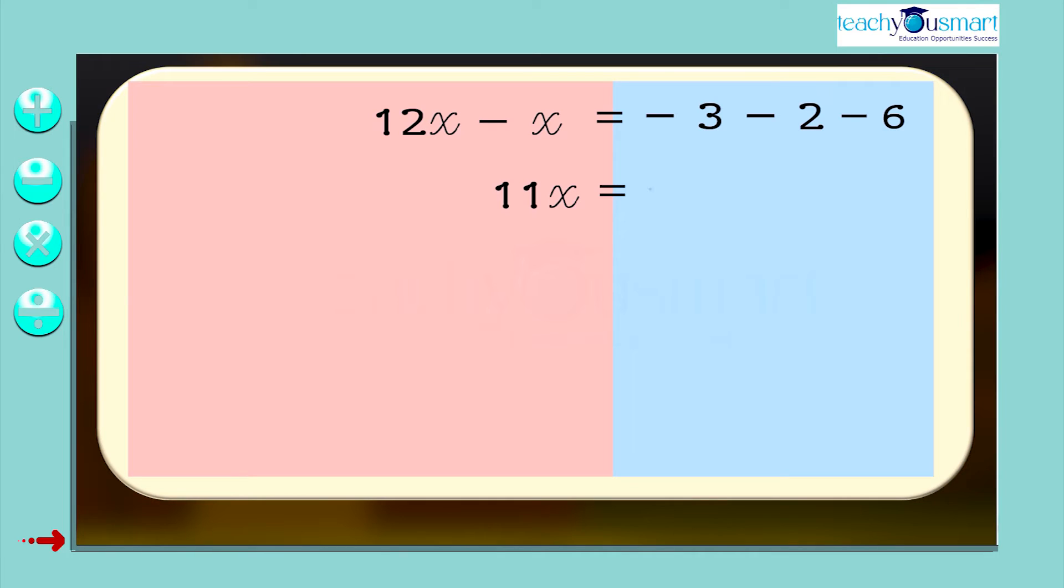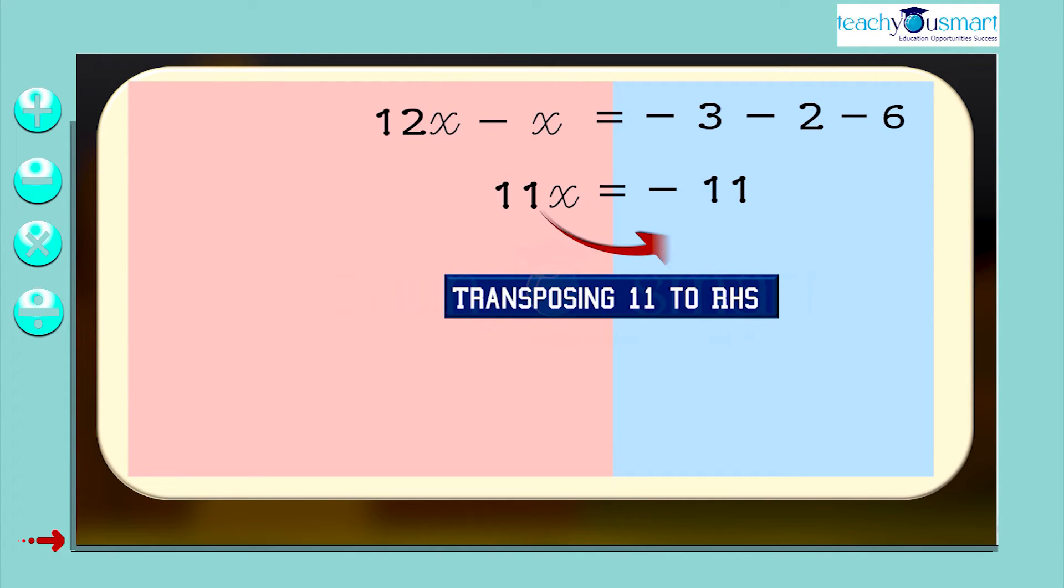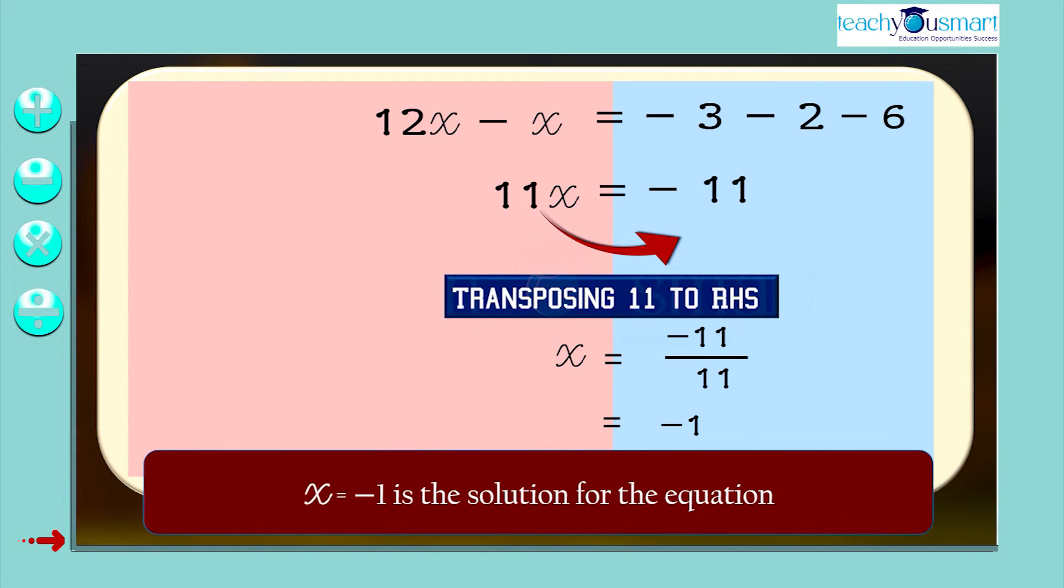11x = -11. Transposing 11 to RHS. Therefore x = -11/11 = -1. That is, x = -1 is the solution of the equation.